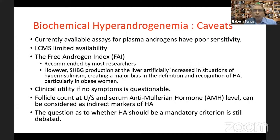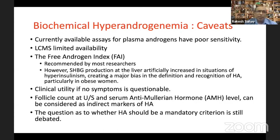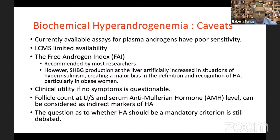When measuring androgen levels, there are several limitations. Currently widely available assays for plasma androgens have poor sensitivity. The more specific LC-MS-based assays are not easily available in clinical practice. To overcome difficulties in measuring free testosterone levels, the free androgen index is often suggested, but SHBG production in the liver may be artificially increased in situations of hyperinsulinism, creating a major bias in recognizing hyperandrogenism, particularly in obesity.